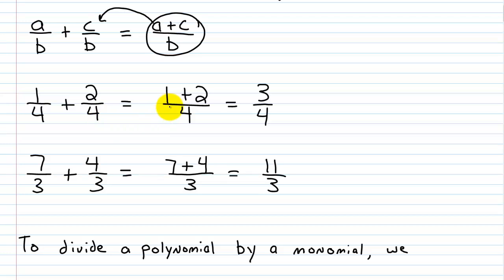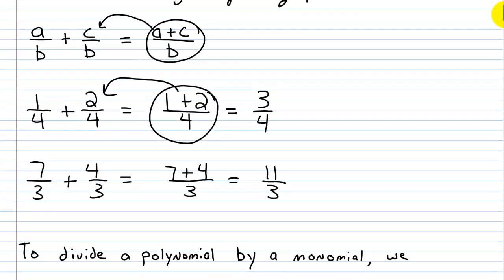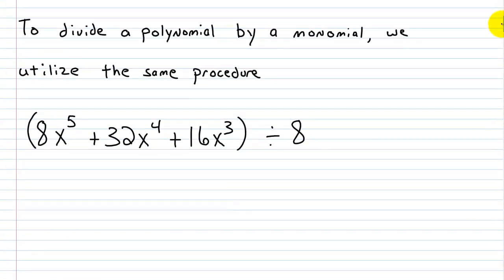For example, 1/4 + 2/4 equals (1+2)/4, which gives us 3/4. And 7/3 + 4/3 equals (7+4)/3, which equals 11/3. This property also works in reverse — we can split a single fraction into separate parts. When dividing polynomials by a monomial, this reverse direction is going to help us.